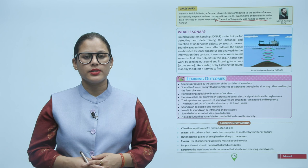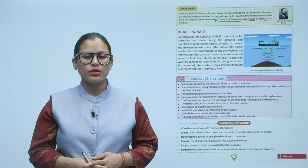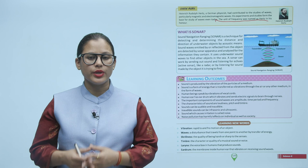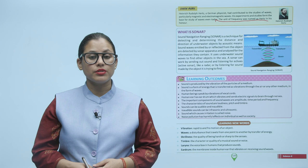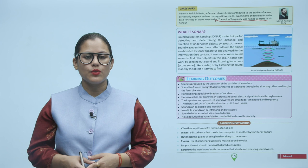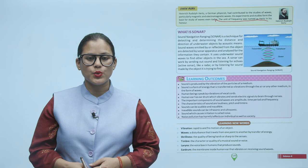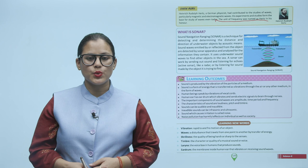Learning outcomes: sound is produced by the vibration of the particles of a medium. Sound is a form of energy transferred as vibration through the air or any other medium in the form of waves. Human beings speak by vibration of vocal cords. The human ear has an eardrum which vibrates and sends electrical signals to the brain through nerves. The important components of sound waves are amplitude, time period, and frequency. The characteristics of sound are loudness, pitch, and timbre. Sounds can be audible and inaudible; inaudible sounds can be infrasonic and ultrasonic. Sound which causes irritation is called noise. Noise pollution has harmful effects on individuals as well as society.